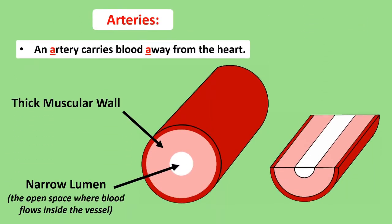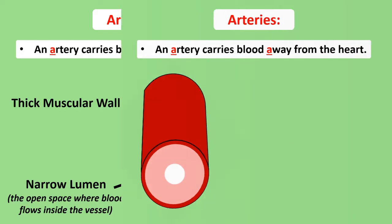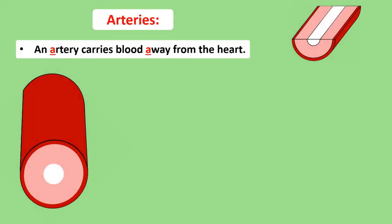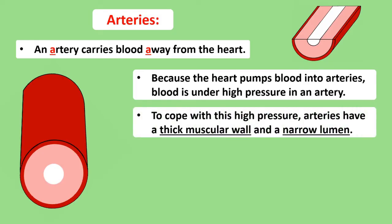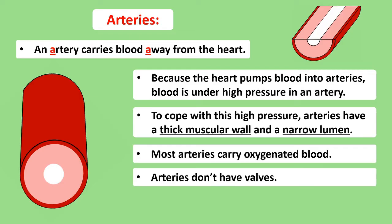Any blood vessel that carries blood away from the heart is known as an artery. An easy way to remember this is: A for artery, A for away. A feature of blood in an artery is that it's under high pressure, because heartbeats forcefully pump blood out of the heart, putting a lot of pressure on the artery walls. That's why arteries need a thick muscular wall to withstand such pressure so that they don't burst. The lumen — coloured in white on the diagram — is the inside space where blood flows through, and it is very narrow. Almost all arteries carry blood that's high in oxygen; in fact, there's only one artery in the body that doesn't, which we'll discuss when studying the heart.